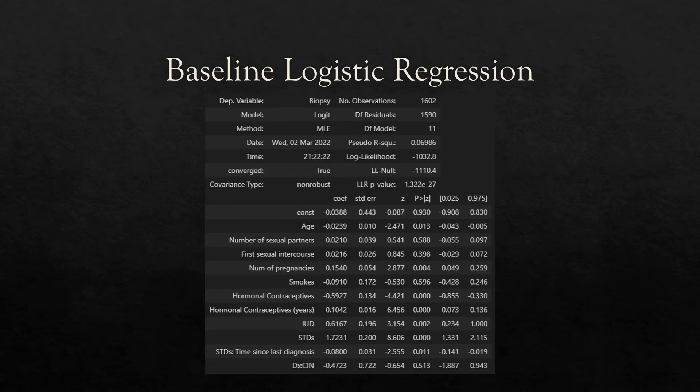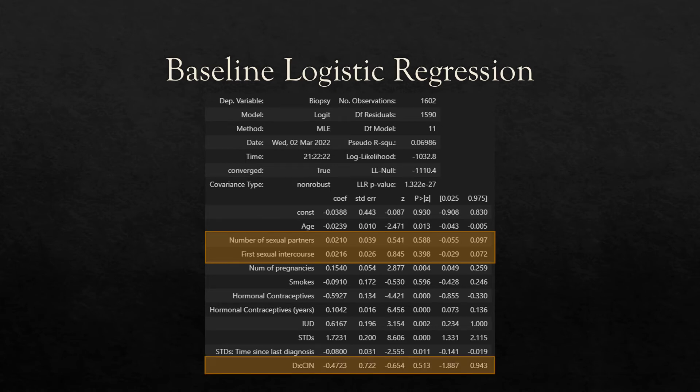The ensuing summary output table shows that the number of sexual partners, first sexual intercourse, and DXCIN, which is the cervical intraepithelial neoplasia features, all have p-values that are greater than the common alpha of 0.05, thereby rendering them not statistically significant, further omitting them from the model and reducing the dimensionality.